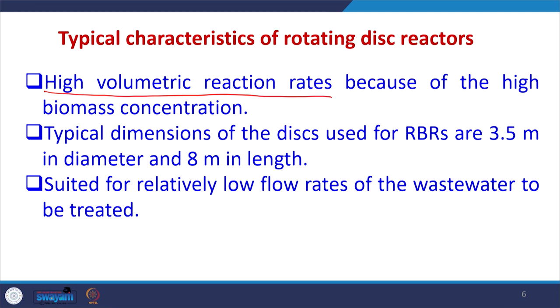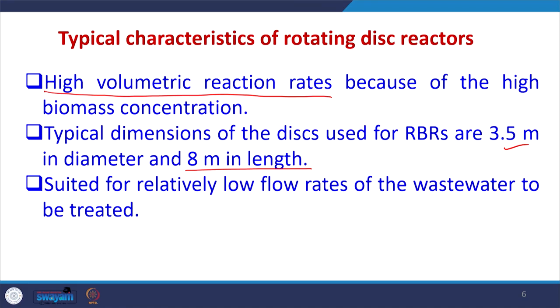Typical dimensions of the disc used for RBRs are 3.5 meters in diameter and 8 meters in length. Various discs can be rotated on the same RBC reactor. These systems are suited for low flow rates of the wastewater to be treated, and depending upon the quantity of water, we can design the RBRs in different manners.